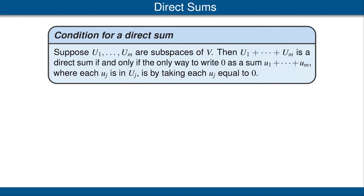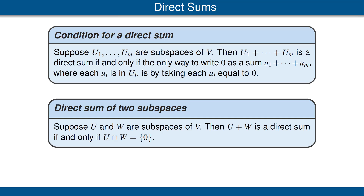Our next result gives a useful condition for checking whether a sum is a direct sum. To be a direct sum, each element has to be written as a sum in just a unique way, but this theorem says it's good enough to just check that 0 can be written as a sum only in a unique way — frequently this is much easier to do. The next theorem concerns the sum of only two subspaces, and it gives a really easy condition: two subspaces are a direct sum if and only if their intersection equals {0}. Be sure to read the proof of this result in the book. This concludes the video on subspaces.